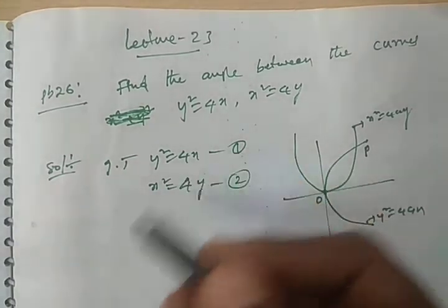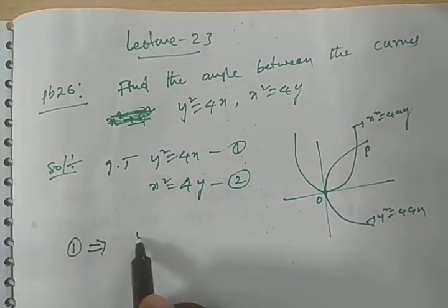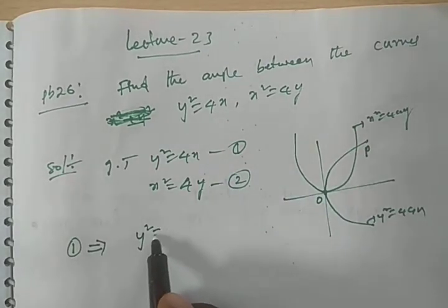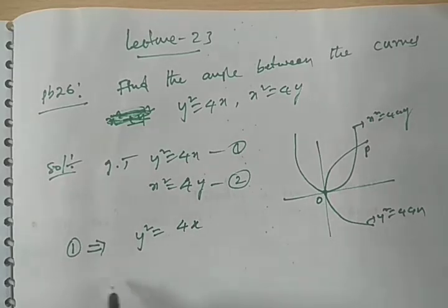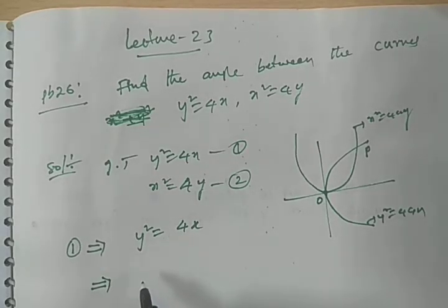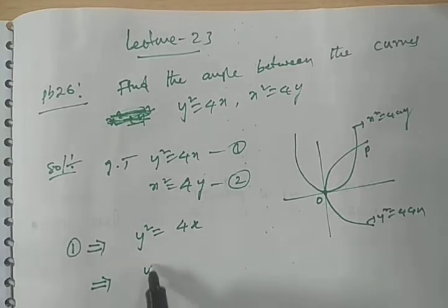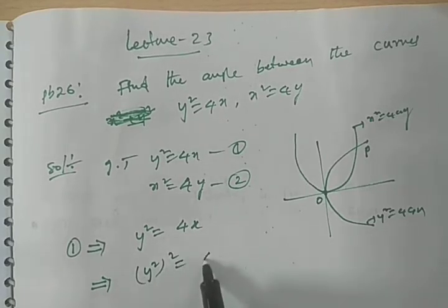We will solve equations 1 and 2. From equation 1, y² = 4x. Now taking both sides squared to get a function of x.